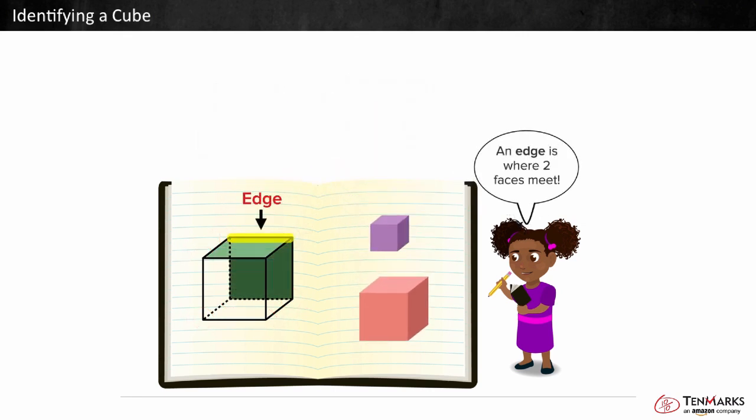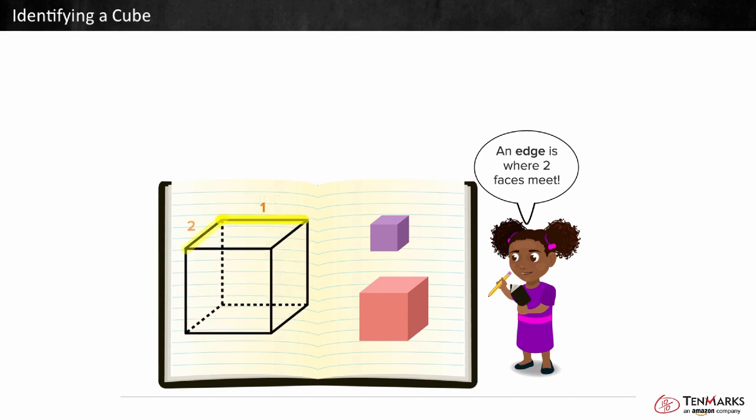An edge is where 2 faces meet. A cube has 1, 2, 3, 4, 5, 6, 7, 8, 9, 10, 11, 12 edges.